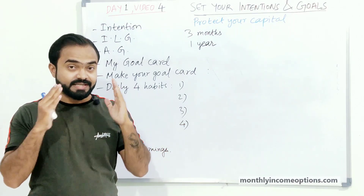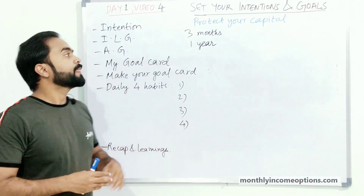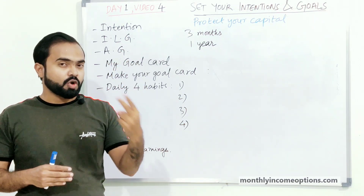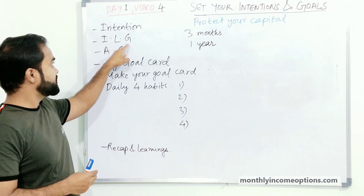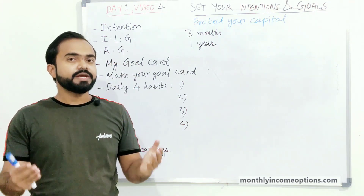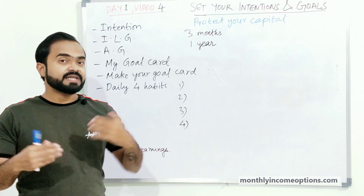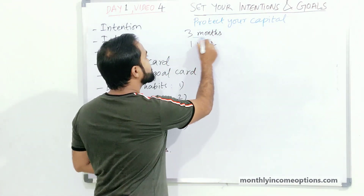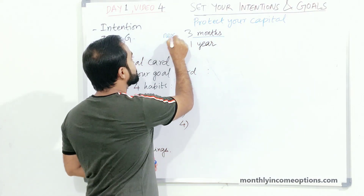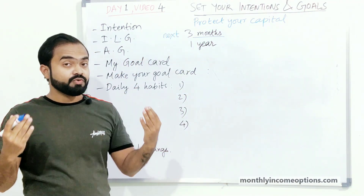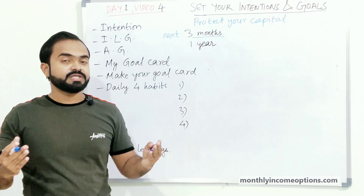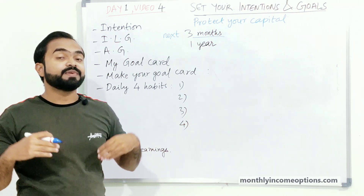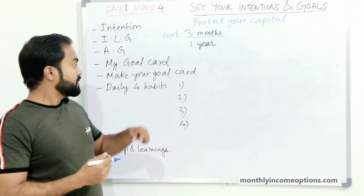Moving ahead, now we will set our goals — we want to achieve our dream number. In goals we have two terms: short-term and long-term. ILG stands for Immediate Lifestyle Goal, which is the goal we set for the next three months — the goal we would like to achieve in the next three months.